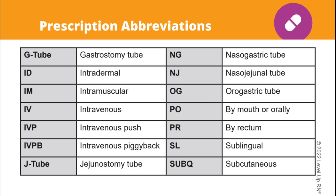Let's go over some common prescription abbreviations, starting with abbreviations for route. G-tube means gastrostomy tube. ID means intradermal. IM means intramuscular. IV means intravenous. IVP means intravenous push. IVPB means intravenous piggyback. J-tube means jejunostomy tube. NG means nasogastric tube. NJ means nasojejunal tube. OG means orogastric tube. PO means by mouth or orally. PR means by rectum. SL means sublingual or under the tongue. SubQ means subcutaneous.